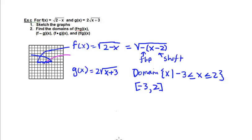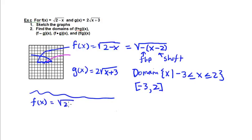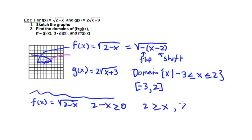This is one way of calculating domains by using graphing. However, we could also do this algebraically. Starting with f of x equals square root of 2 minus x, we want the interior to not be negative — so 2 minus x must be greater than or equal to 0. Solving for x, we add x to both sides to get 2 is greater than or equal to x, or equivalently, x is less than or equal to 2.